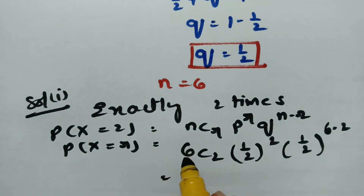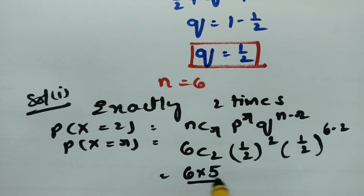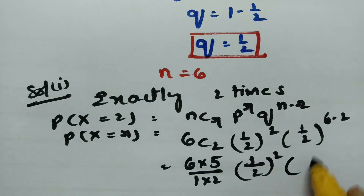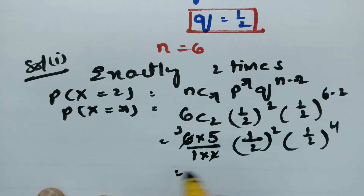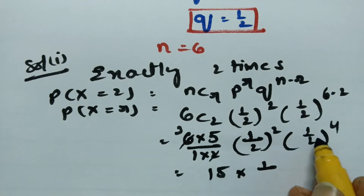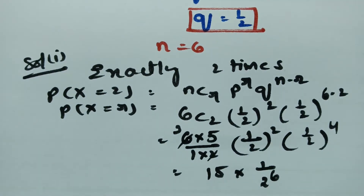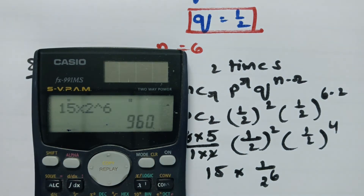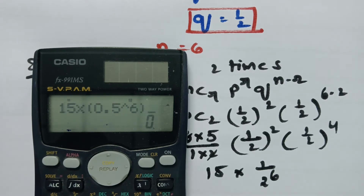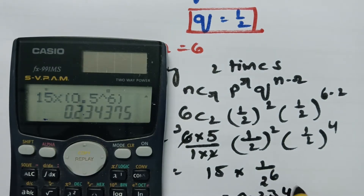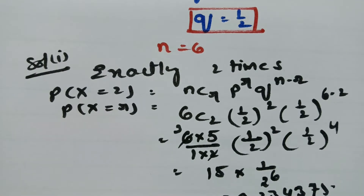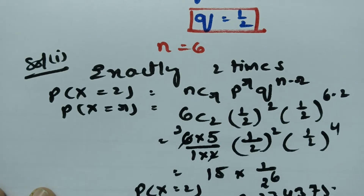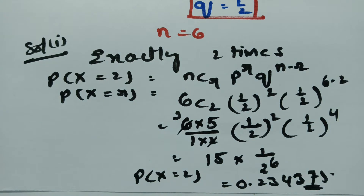Substituting: 6C2 times (1/2)^2 times (1/2)^4. Now 6C2 equals 6 times 5 divided by 1 times 2, which gives 15. So we have 15 times (1/2)^6, which equals 15 times 0.5^6. The value is 0.234375. Hitting the target exactly 2 times has probability 0.234375.